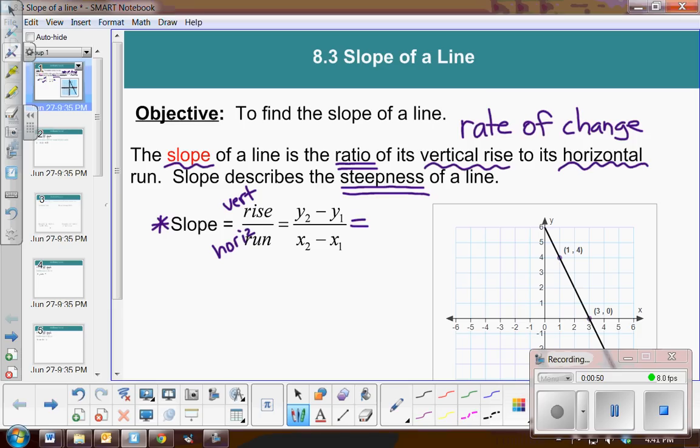Now another way of representing it is to say it's the change in y. Now that triangle actually is representing a Greek letter in the alphabet called delta. And delta is change in. So we have the change in y over the change in x. So you should be familiar with all three ways of representing slope.